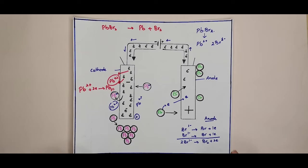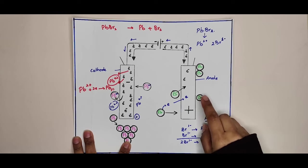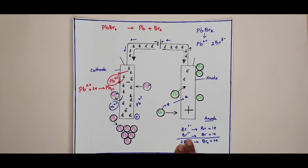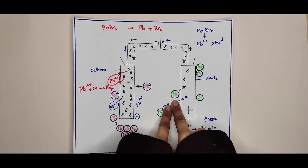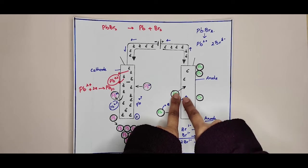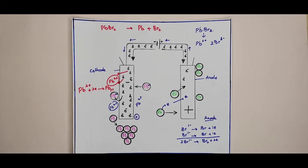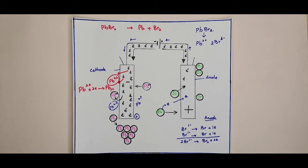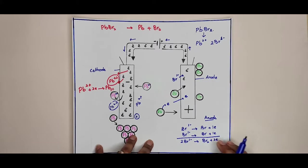At the anode, bromide ions give their electrons to the electrode to become bromine atoms. All halogens are not stable in monoatomic form; they are stable in diatomic form, so bromine atoms readily combine to form bromine molecules. So the bromide ions give up their electrons to become bromine atoms, and then bromine molecules are formed.